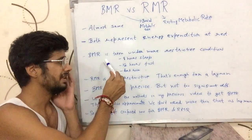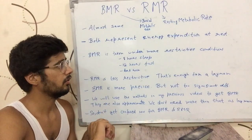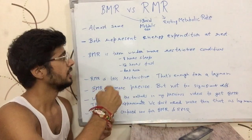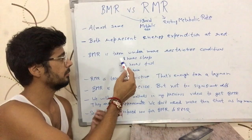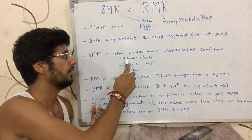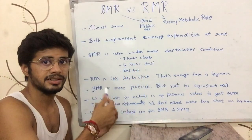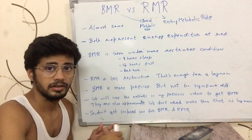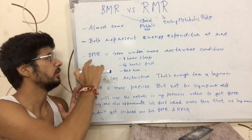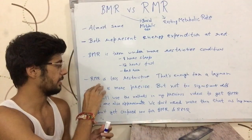But there is a slight difference. BMR is measured under some restrictive conditions while RMR is not measured with so many restrictive conditions. The conditions for BMR include: the subject should have had 8 hours of sleep, should not have eaten anything for 12 hours so that the digestive system is inactive, and the subject is kept in a dark room. These restrictive conditions are used to measure BMR, while not-so-restrictive conditions are used to measure RMR.